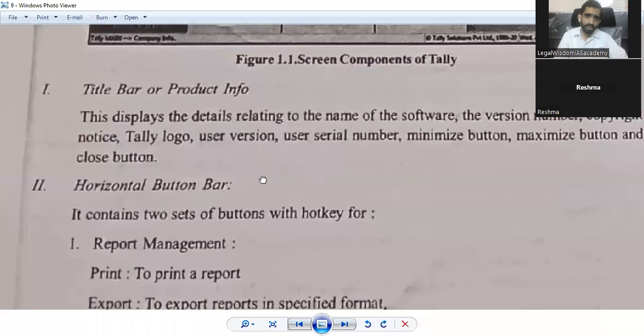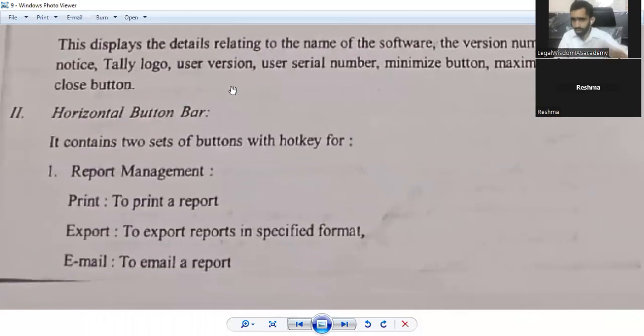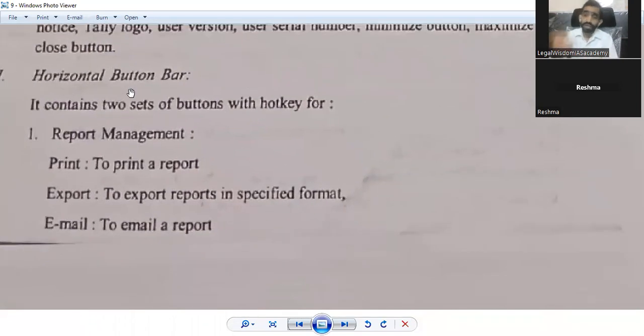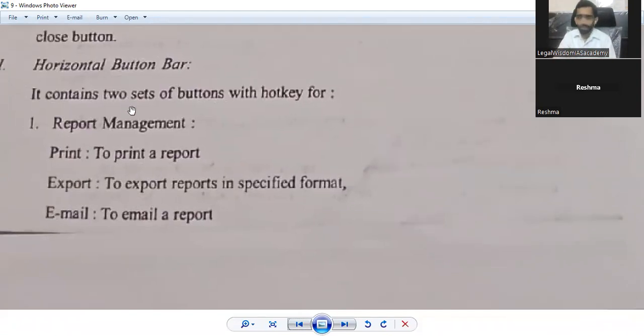The second one which we are going to discuss is the horizontal button bar. In horizontal button bar, there are majorly hotkeys - these are the shortcuts. There are two sets of buttons with hotkey. Hotkey is nothing but the shortcut button. In computer language, we call it as hotkey which you can set for your facility. Let us see the first set.